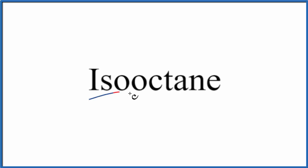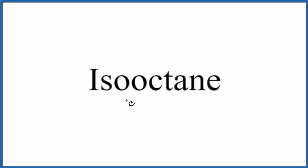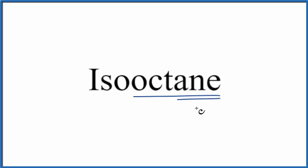Let's write the structural formula for isooctane. This one's a bit challenging. So we have octane — it ends in A-N-E, which means it's an alkane. It's all going to be carbons with single bonds surrounded by hydrogens. 'Oct' tells us we're going to have eight carbons.